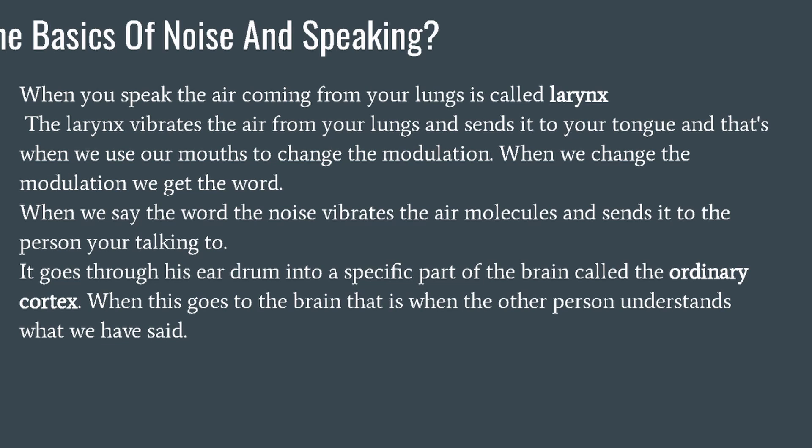The basics of noise and speaking. When you speak, the air coming from your lungs passes through the larynx. The larynx vibrates the air from your lungs and sends it to your tongue. Then we use our mouths to change the modulation — when we change the modulation, we get the word. The larynx is also known as the voice box. When you say 'change the modulation,' for example, you won't say 'Vicky' in a flat tone — you'd say 'Vicky' with natural inflection.